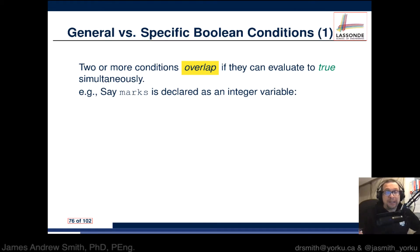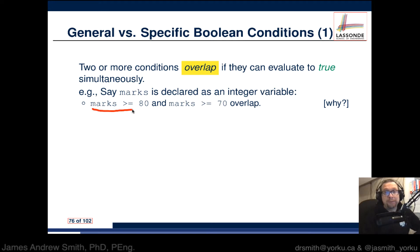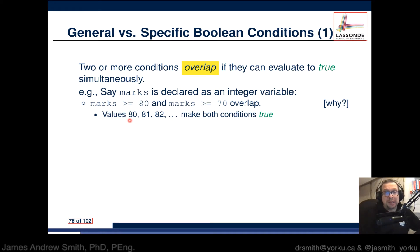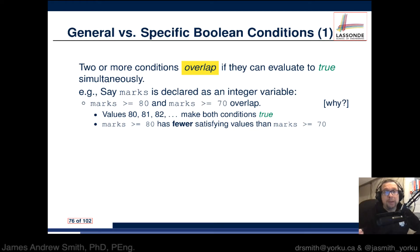In the previous video we had an example where we're looking at a student's marks. If marks is declared as an integer variable, we have a test condition asking is marks greater than or equal to 80, and another asking is marks greater than or equal to 70. Do these two overlap? Yes, they do — for example, if the variable value was 80, 81, or 82, in those cases the value is both greater than or equal to 80 and greater than or equal to 70. So there is some overlapping between those two conditional statements.